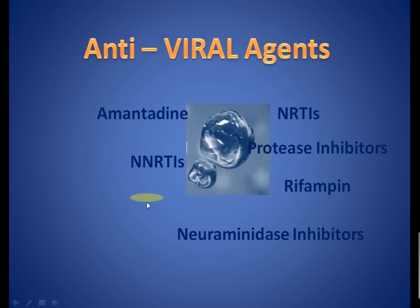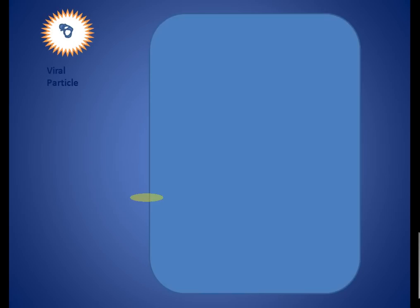So let's begin with the video on antiviral agents. This is a cell and this is a viral particle. Let's see how a viral particle acts when it approaches a cell — what stages it goes through and what checkpoints we can intervene and hit with our drugs.